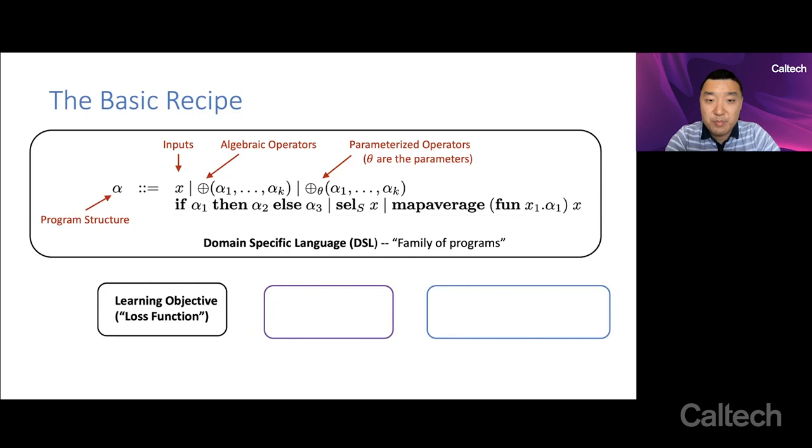So you have this domain-specific language. Just like in machine learning, you specify a learning objective or a loss function. For example, given labeled data, minimize the classification error according to something like log loss or cross-entropy loss or something like that. That's fairly standard.